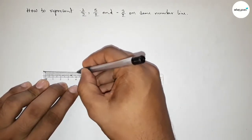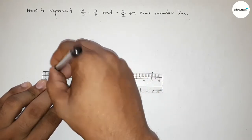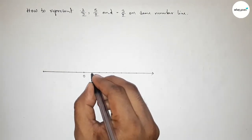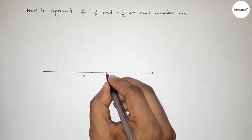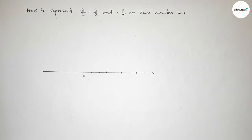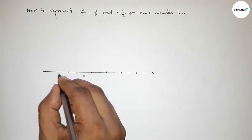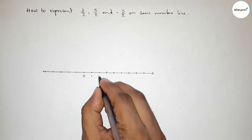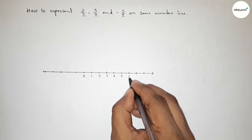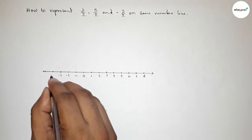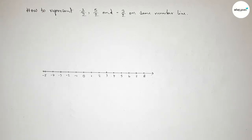Now deeply marking the numbers on the line to understand perfectly. On this side: one, two, three, four, five, six, seven, eight. And on the negative side: minus one, minus two, minus three, minus four, minus five. So this is our number line.